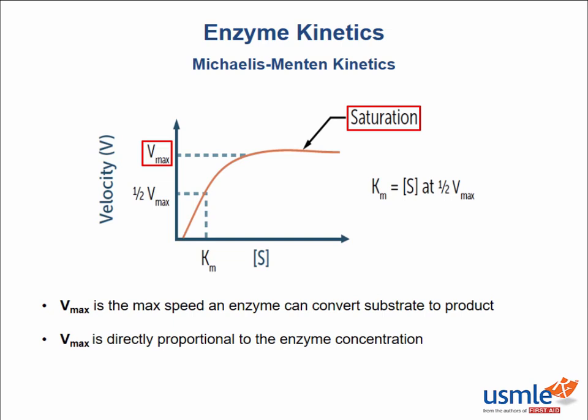As you see from the graph, at a certain point adding more substrate does not increase the velocity of the reaction — adding more flowers does not produce more honey. The only way to increase Vmax is by adding more enzyme. This is why enzymatic reactions follow a hyperbolic curve: the velocity initially increases as substrate is added but then tapers off as the enzymes become saturated.